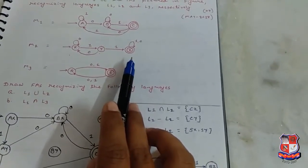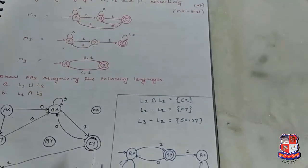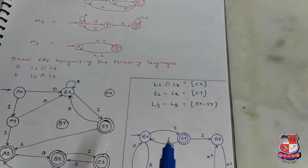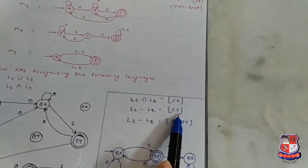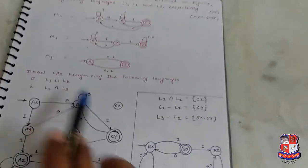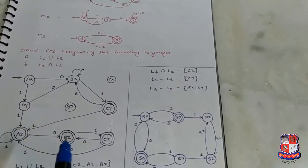So for L1 minus L2, only states which present in L1 but not in L2. So C Y is the final state for L1 minus L2. Rest of the automata is the same.